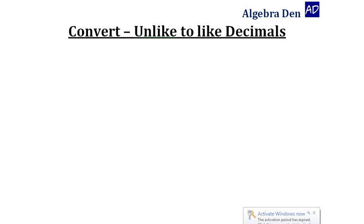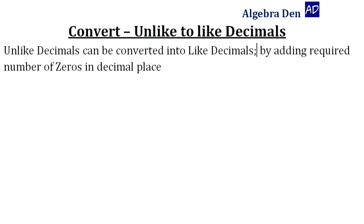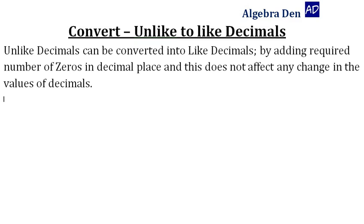How to convert unlike decimals to like decimals? Unlike decimals can be converted into like decimals by adding the required number of zeros in decimal places. This does not affect any change in the values of decimals.